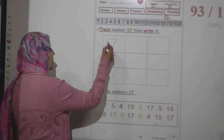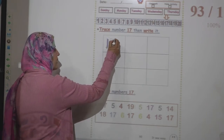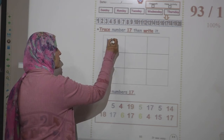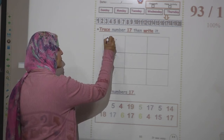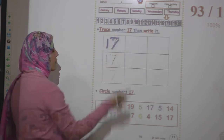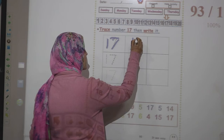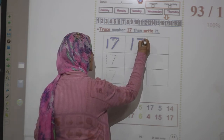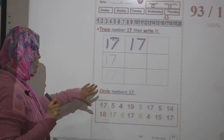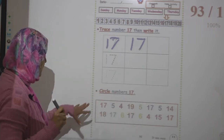Our number for today is number 17. Okay, next — here, trace number 17, then write number 17. Stick down, sleeping dash and slash. How do we write number 17? Stick down, sleeping dash and slash.